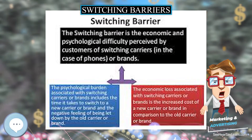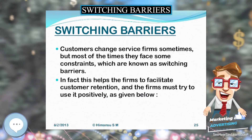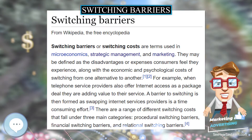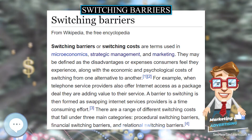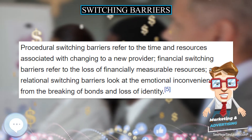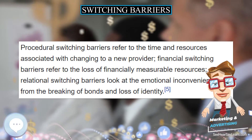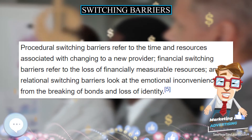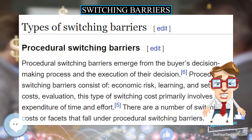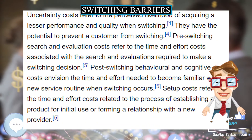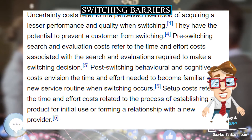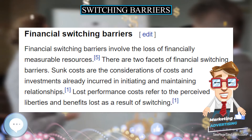In the marketing literature, customers face three types of switching costs. One: financial switching costs, for example fees to break a contract or lost reward points. Two: procedural switching costs — the time, effort, and uncertainty in locating, adopting, and using a new brand or provider. And three: relational switching costs — personal relationships and identification with a brand and its employees.